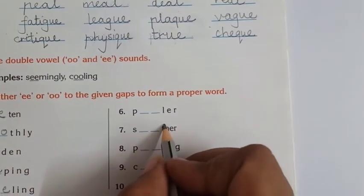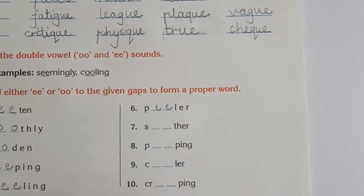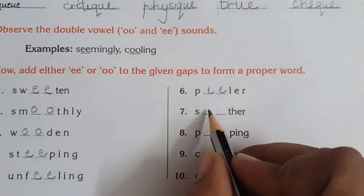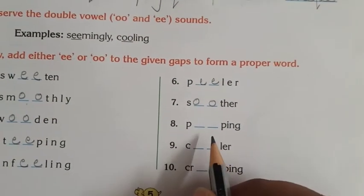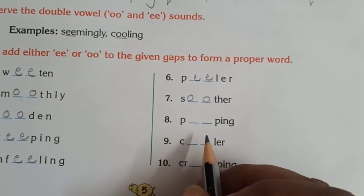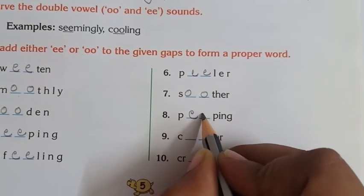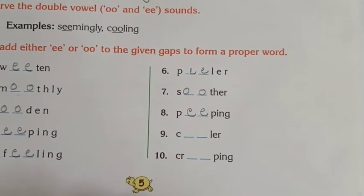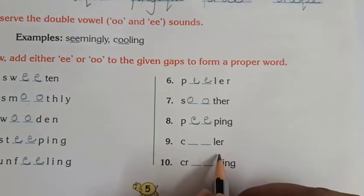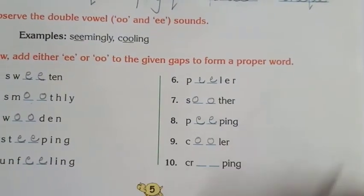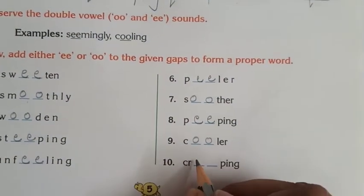'Peeler' or 'pooler' — 'peeler'. Then 'seeder' or 'soother' — 'seeder'. 'Peeping' or 'popping' — 'peeping'. Then 'sealer' or 'cooler' — 'sealer'. 'Creeping' or 'crouping' — 'creeping'.